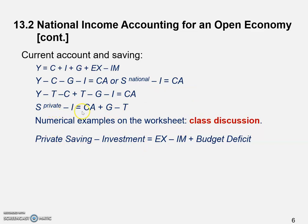We haven't yet finished the math derivation. Let me write out the variables so they're directly visible. S_private is private saving, I is investment — the left-hand side stays the same. On the right-hand side, the current account is the difference between exports and imports. The last part of the right-hand side is G minus T. If government spending is greater than taxes, this difference gives us the government's budget deficit.